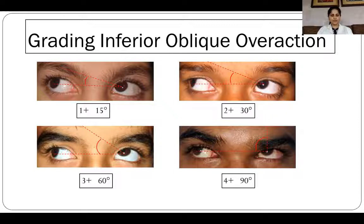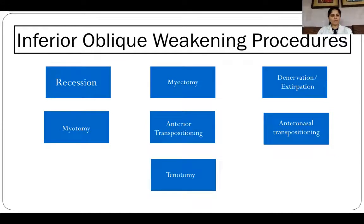The amount of inferior oblique overaction is defined as the angle formed by the intersection between a horizontal line and the tangent line which corresponds to the direction of ocular movement. Various surgical procedures have been described to weaken the inferior oblique, and these include recession, tenotomy, myotomy, myectomy, denervation extirpation, antero-transpositioning, antero-nasal transpositioning, and graded antero-transpositioning.